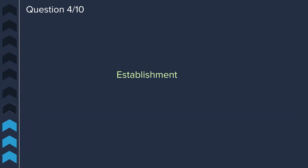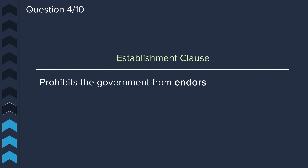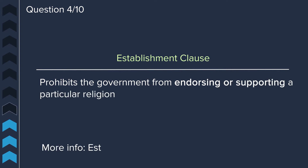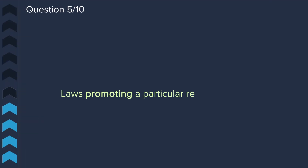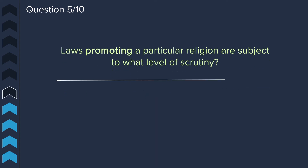Question four: what is the establishment clause? The establishment clause prohibits the government from endorsing or supporting a particular religion. Question five: laws promoting a particular religion are subject to what level of scrutiny? Strict scrutiny.